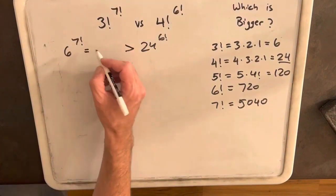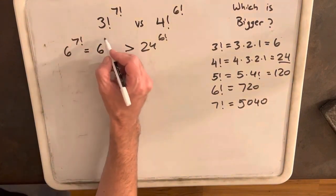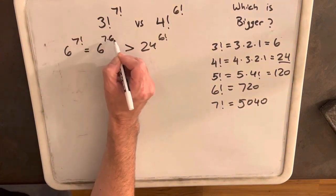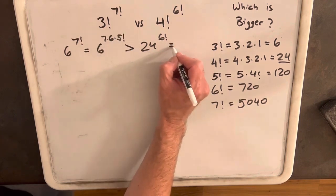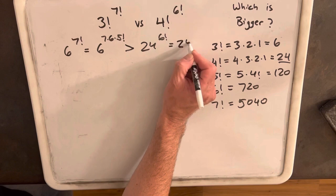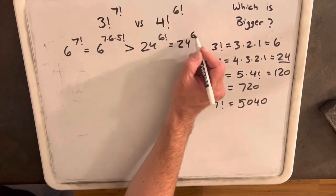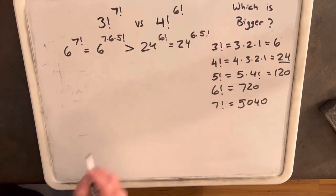But then I just want to rewrite this exponent. So I'm going to rewrite 7 factorial as 7 times 6 times 5 factorial. And we'll rewrite this one as 6 times 5 factorial for our 6 factorial.